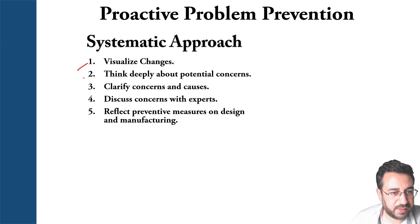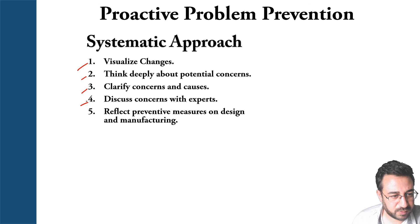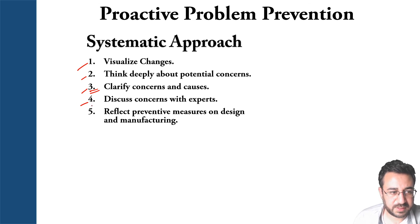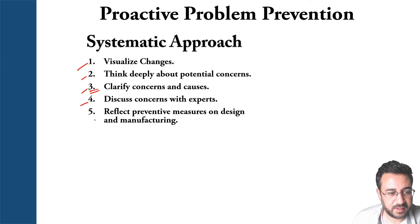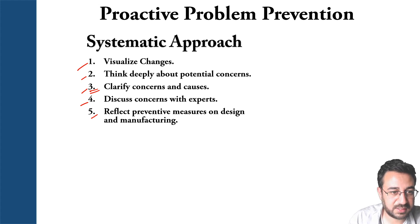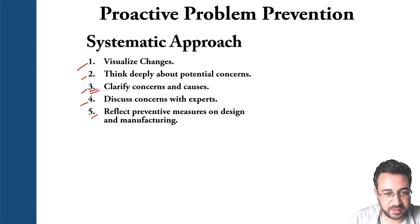First, visualize; then think deeply about potential concerns; clarify those concerns and causes; then discuss with experts. The five whys can be part of the clarification step — clarify why concerns are happening and do the root cause analysis. If you can't identify a certain failure mode in a component, discuss with experts to identify why it is happening and what the sources of the problem are. Then reflect preventive measures on the design and manufacturing, do corrective actions, go back with design review members, and redo the DRBFM process on that part to confirm it is no longer a concern.